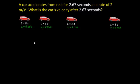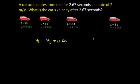The first kinematic equation states: final velocity equals the initial velocity plus the acceleration times the time during which the object is accelerating. The term acceleration times change in time represents how much the velocity increases during that interval. Now let's summarize the information we have.